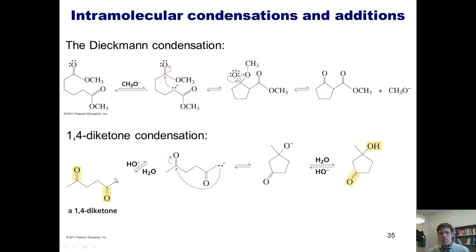In the first scenario, if my base strips off an alpha hydrogen here, it gives me a negative charge at the right terminal end. This negative charge could then wrap around and form a bond with that carbon. So I formed a bond between this terminal carbon and this carbonyl carbon, pushing the electrons up onto the oxygen.